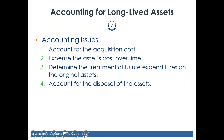So, accounting for long-lived assets. There are things you have to consider: the acquisition cost, also known as the historical cost. You have to take the acquisition cost and expense it over time — the asset is initially recorded as an asset, and then part of that cost is transferred to expense. That process is known as depreciation for plant assets. We also have to consider how to treat future expenditures on the original assets and how to account for disposal of the asset.